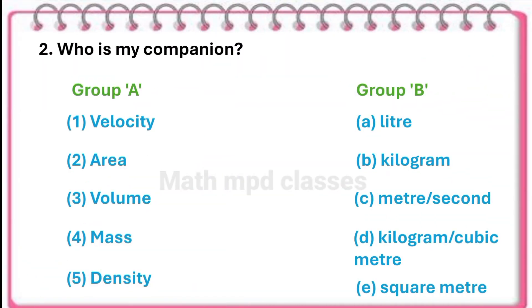Question number two: who is my companion? Here, group A and group B is given. First, velocity, that is meter per second. Second, area, square meter. Third, volume, liter. Fourth, mass, kilogram. Density, kilogram per cubic meter.